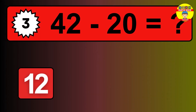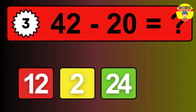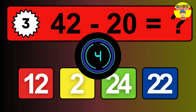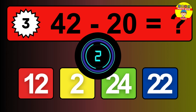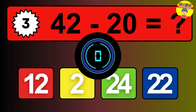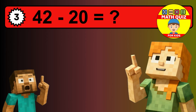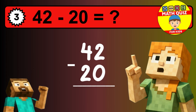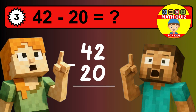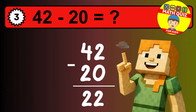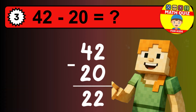What is 42 minus 20? Time to think. Let's solve this step by step. We start with the units: 2 minus 0 is 2. Then we go to the tens: 4 minus 2 is 2. The final answer is 22.